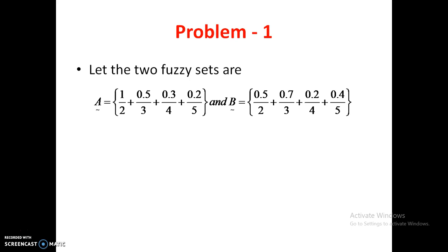If nothing is written, the membership value is 0. In this problem we will consider the values from 1 to 5. So at 1, the value for A is 0 and for B is also 0 — that is taken as granted. For values 6, 7 and up to infinity, all membership values are also 0. We will consider only 5 points: 1 to 5. Please keep that in mind and try to solve the problem.